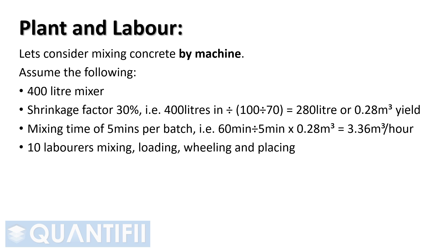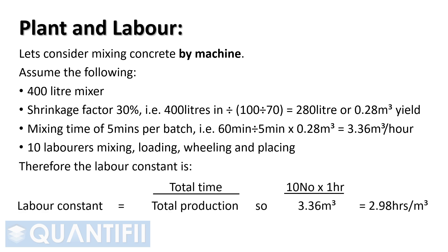10 laborers mixing, loading, wheeling, and placing. Therefore the labor constant is 10 multiplied by 1, divided by 3.36 cubic meters, equals 2.98 hours per cubic meter.